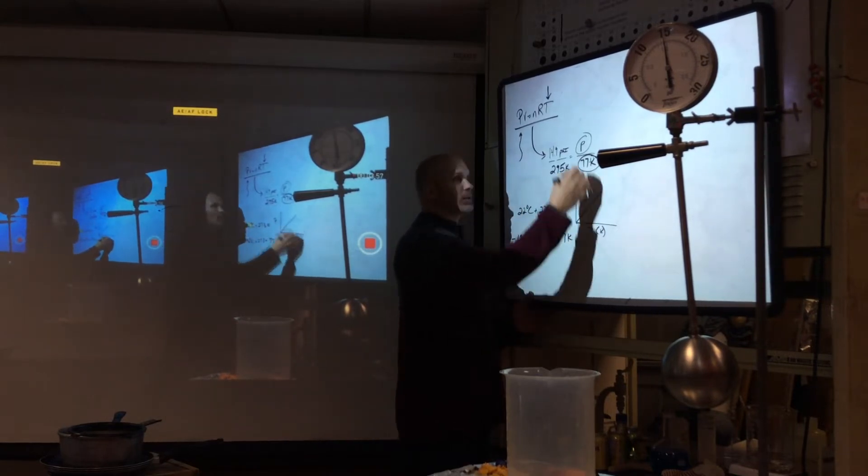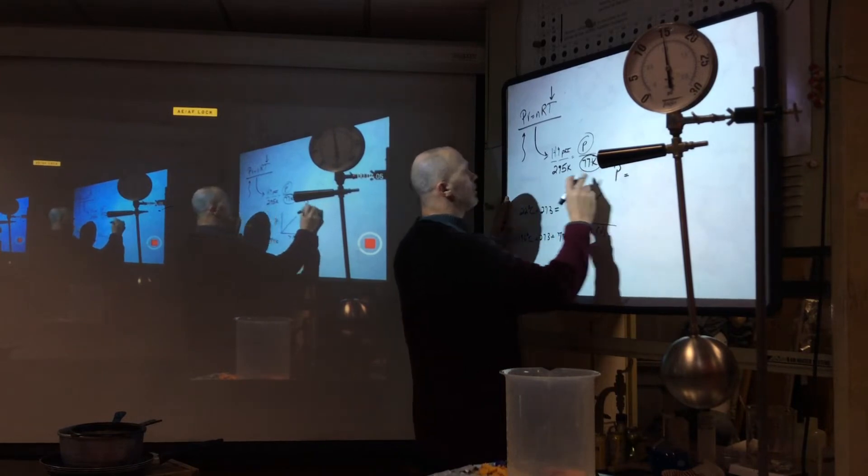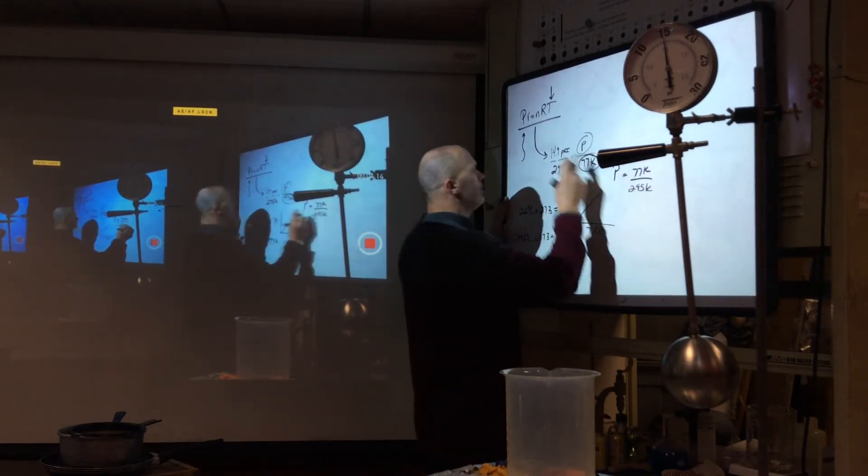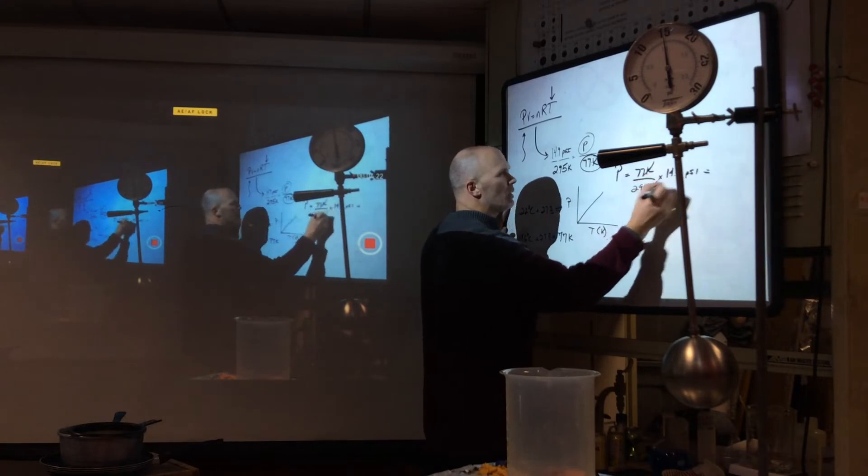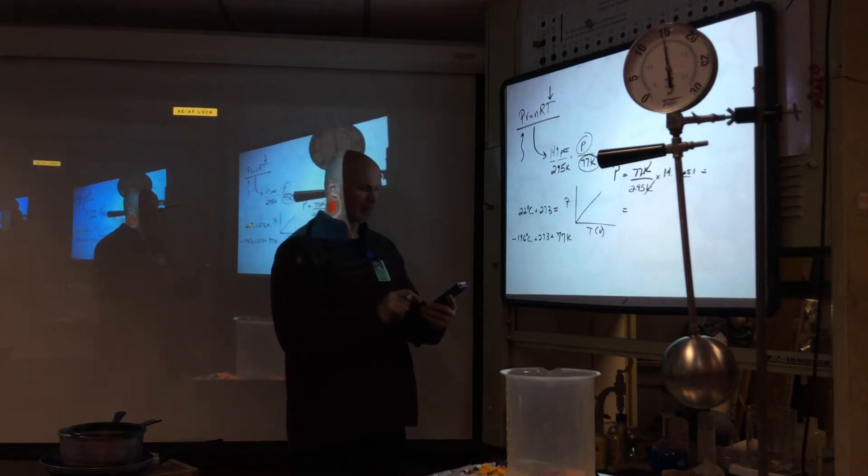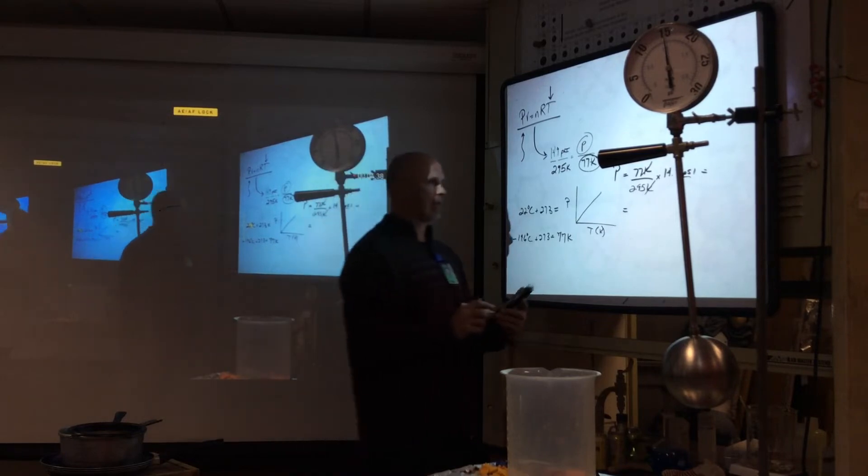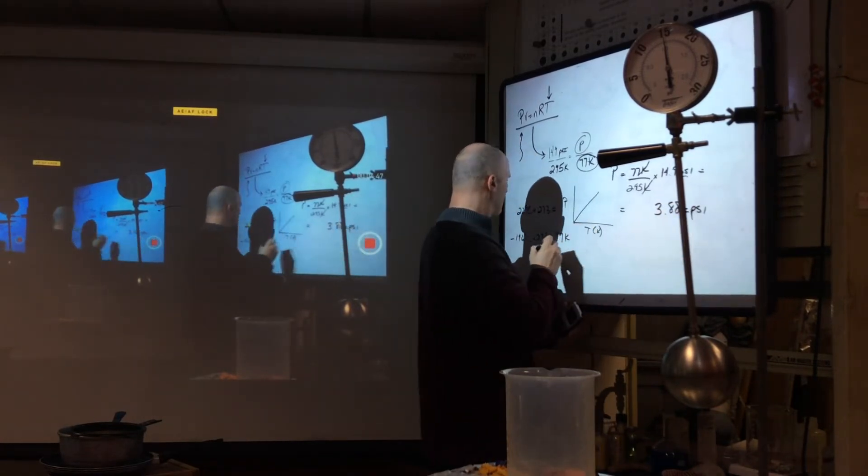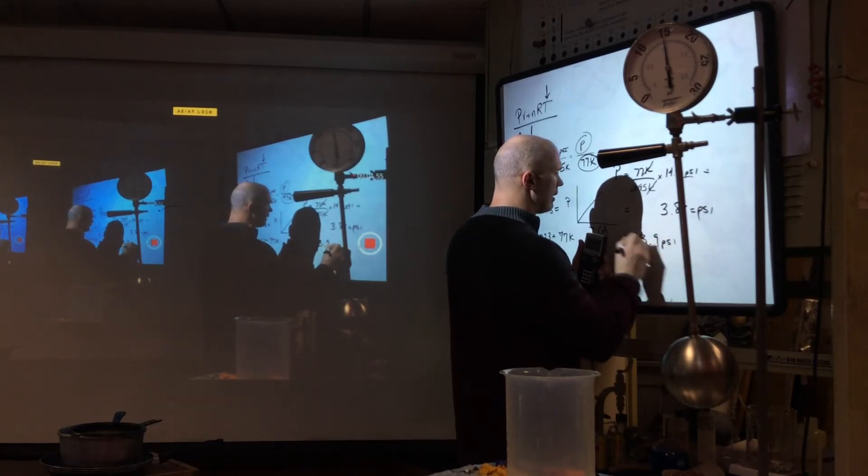This is going to be obviously a proportionate type of scenario. Temperature and pressure is proportionate if our temperature is in Kelvin. So let's go solve for that. All right, so if I solve for that and I use my algebra, P is going to equal 77 Kelvin over 295 Kelvin times 14.9 PSI. Kelvins cancel, I'm left with PSI. Let's go find that value. 77 divided by 295 times 14.9, and I get approximately 3.88 PSI.